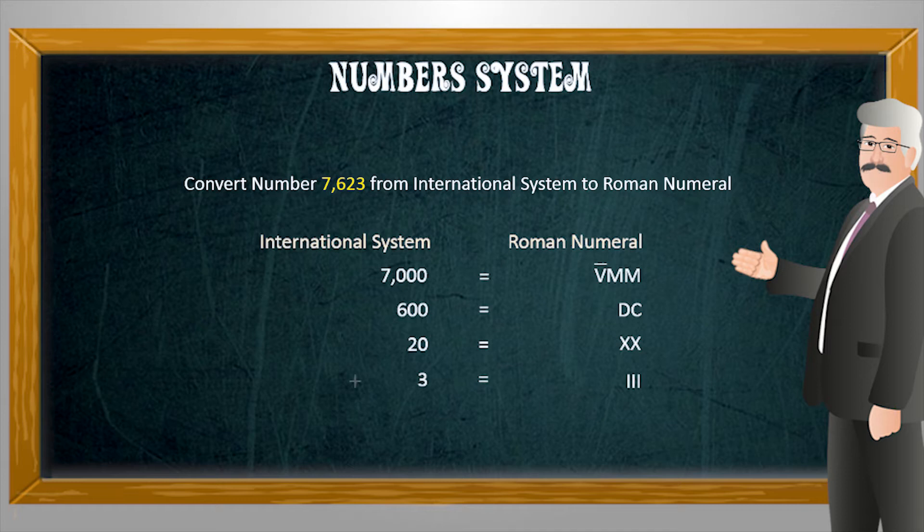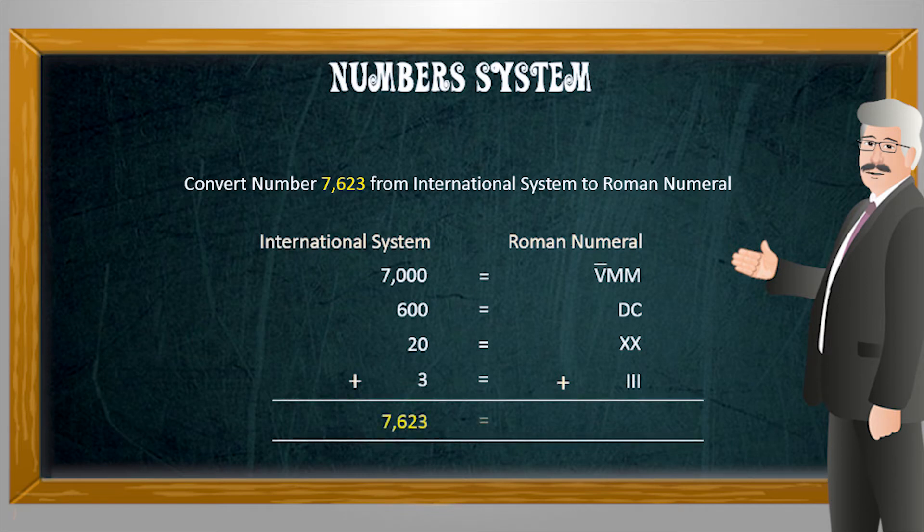For example, number seven in the example is at thousands place so its place value will be written as seven thousand. Similarly, place values of six, two, three are six hundred, twenty, and three respectively. Now replace the Roman numeral for each of these place values keeping in mind all the principles we discussed earlier and then combine these symbols for the final result.